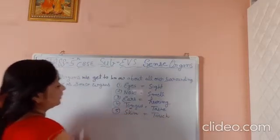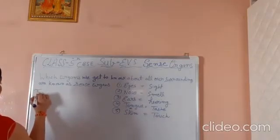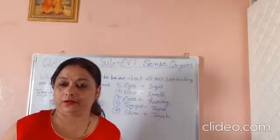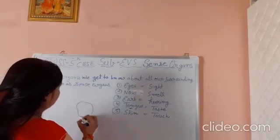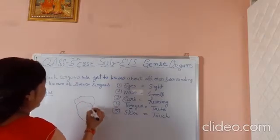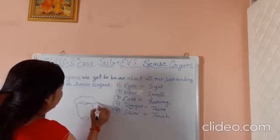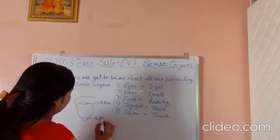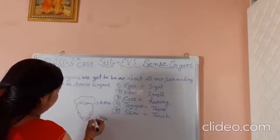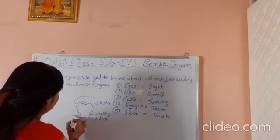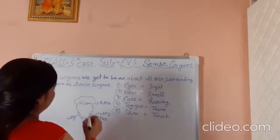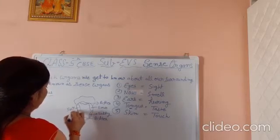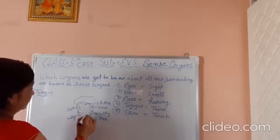Here we will discuss about tongue. Our tongue has many taste buds. This is a rough diagram of the tongue — you can see it on your screen. There is bitter, salty, and sour. These are the many taste buds formed in our tongue.